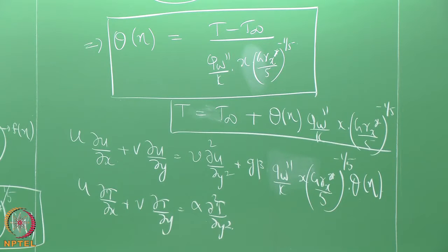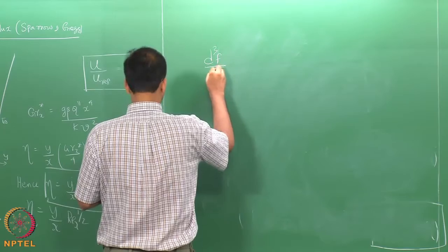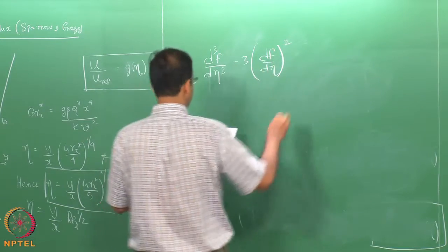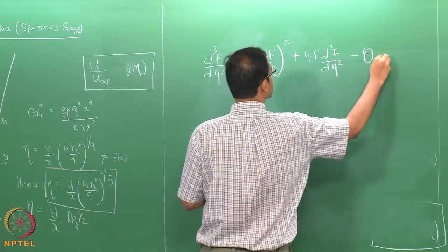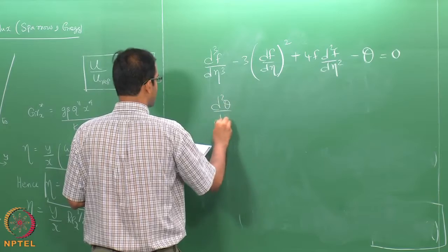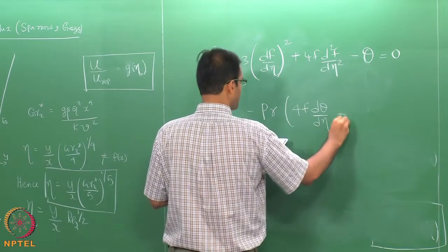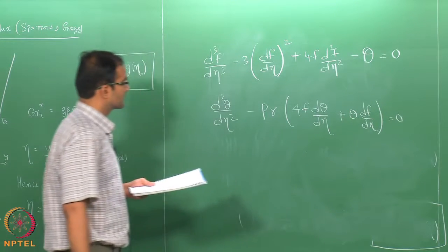You will find that this transforms the equations into similarity ordinary differential equations as a function of eta only. The momentum equation becomes: d³f/d_eta³ − 3(df/d_eta)² + 4f d²f/d_eta² − theta = 0. The energy equation becomes: d²theta/d_eta² − Pr times (4f d_theta/d_eta + theta df/d_eta) = 0. This is the final transformed set of equations. You can try deriving this at home the same way as for the constant wall temperature case.